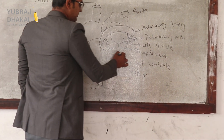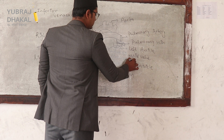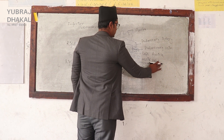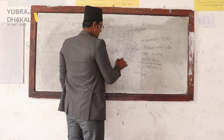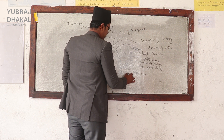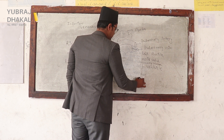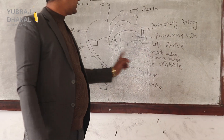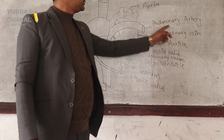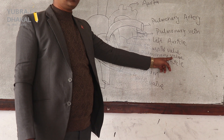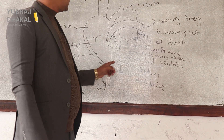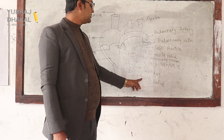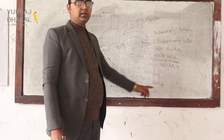This is the pulmonary valve. The pulmonary valve is derived from the pulmonary artery, so it is called the pulmonary valve — remember this one. And this aortic valve has arrived from the aorta, so remember this one. From the aorta, it is the aortic valve.